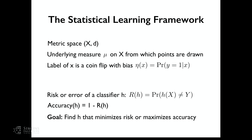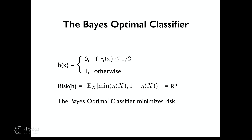Before getting to nearest neighbors, let me introduce the Bayes optimal classifier. It predicts 0 if eta(x) is less than or equal to 1/2, and 1 otherwise. The risk of this classifier is the expectation over x of min(eta(x), 1 minus eta(x)), which we call r*. This classifier minimizes risk — no other classifier in the world will do better given this distribution.